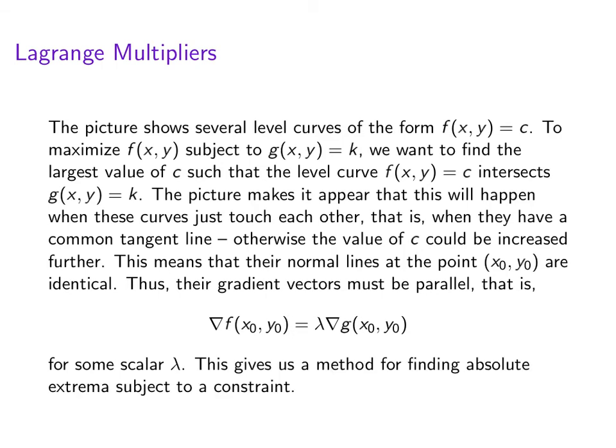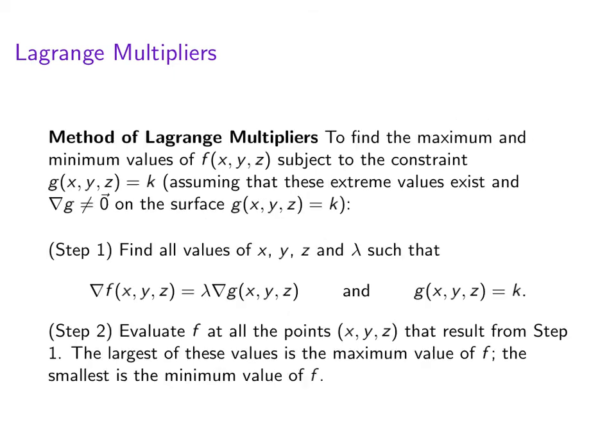So this gives us a general method for finding absolute extrema subject to some constraint. This is called the method of Lagrange multipliers. Now we're stating this for functions of three variables, but you can use this for function of two variables also. So if you want to find the maximum and minimum values of f subject to some constraint g(x,y,z) = k, and we'll assume that these extreme values exist, and we're also going to assume that the gradient of g is not equal to zero. So g is a smooth surface.